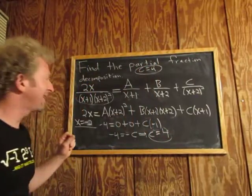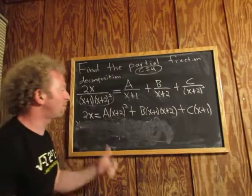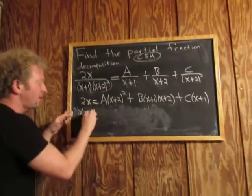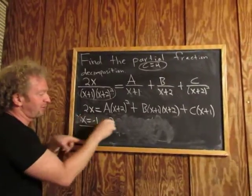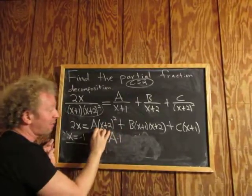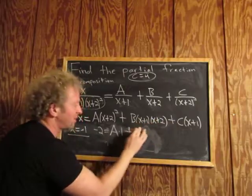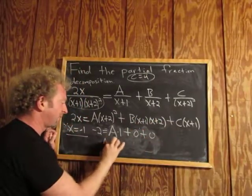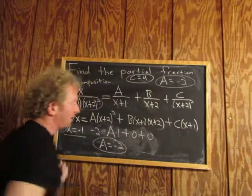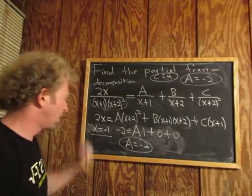To find another letter, we do the same thing. We already used negative 2, so now we plug in x = -1. We get 2(-1) = -2. Here, -1+2 = 1, and 1 squared = 1, so we get A times 1. The B and C terms both go to 0 because -1+1 = 0. So A = -2.